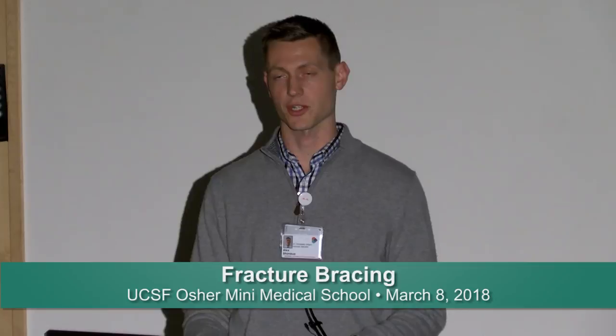Here is an example of an off-the-shelf femoral fracture brace. It has an adjustable thigh section with metal or aluminum uprights running up and down the inside and outside, and you can still adjust tightness with Velcro straps. Polypropylene is a thermoplastic material that can be heated, easily shaped, trimmed, bent, and padded. It would have a foot insert inside the shoe. The ankle joint can be free motion, stopped, or allowing some motion. Suspension is achieved through femoral condyle extensions and the foot insert. Total contact and hydrostatic pressure are important for tissue compression and maintaining alignment. We use radiographic imaging to monitor angular deformation throughout the wearing process.